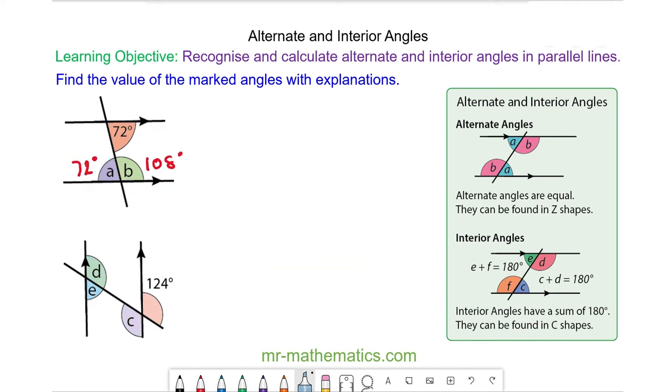We can see angle C and the 124 degree angle are vertically opposite. So C will equal 124 degrees. Angle C and angle D are alternate. So D will also be equal to 124 degrees.